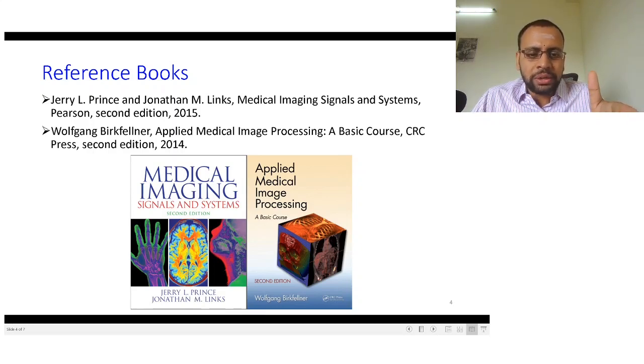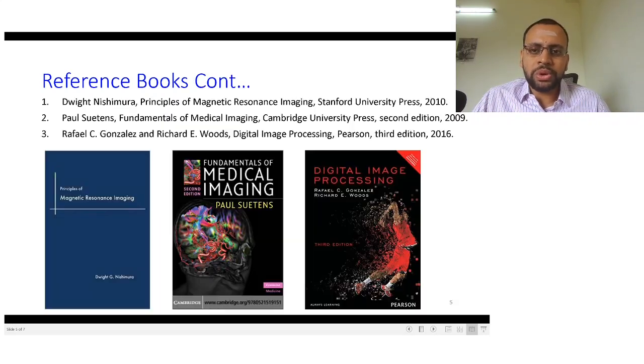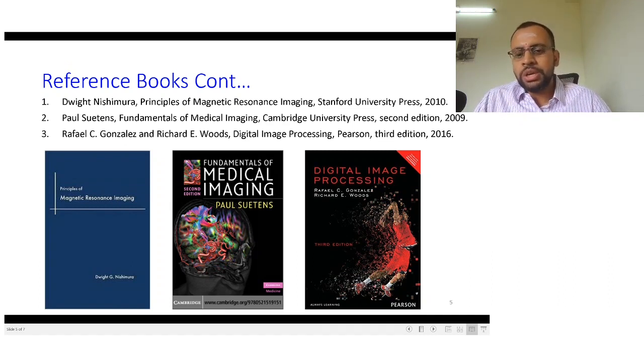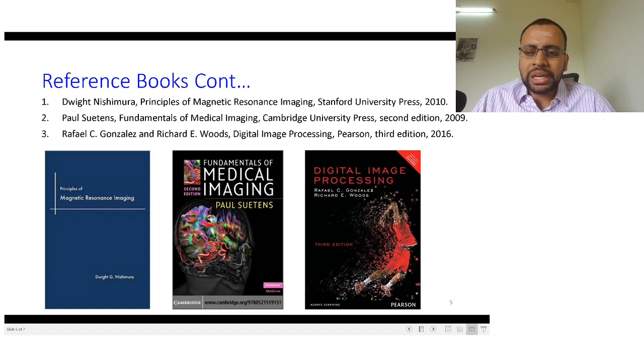Another book that we will be using is Applied Medical Image Processing by Wolfgang. And when it comes to the fifth module on MR imaging, a lot of content is adopted from the book titled Principles of Magnetic Resonance Imaging by Stanford University Press, this book is written by Nishimura. So this is the textbook that we would be in particular following for MR imaging.